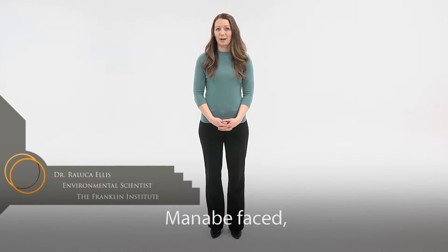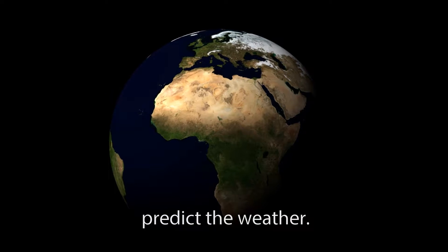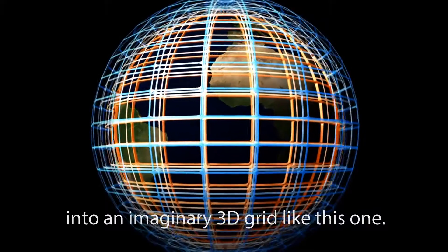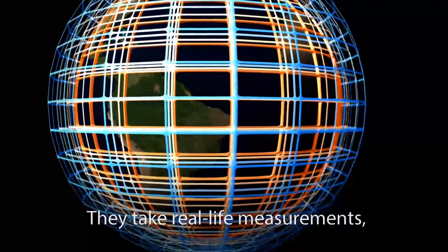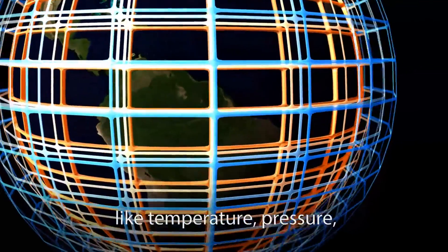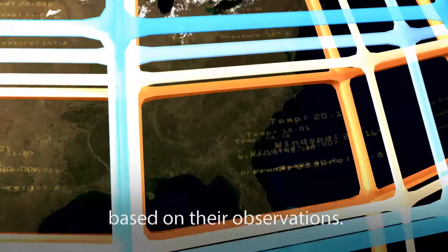To understand the challenges Minabi faced, let's take a look at how meteorologists predict the weather. Forecasters divide the atmosphere into an imaginary 3D grid like this one. They take real-life measurements, like temperature, pressure, and wind speed, and assign each grid point a numerical value based on their observations.